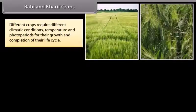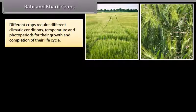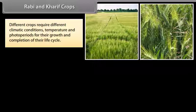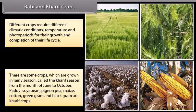Different crops require different climatic conditions, temperature and photoperiods for their growth and completion of their life cycle. Growth of plants and flowering are dependent on sunlight. There are some crops which are grown in the rainy season, called the Kharif season, from the month of June to October.